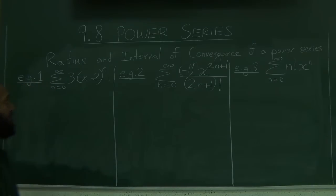Okay, we continue from where we left off. We had just talked about this theorem which tells us about when a power series converges and what the set of convergence looks like. We're going to run through a few examples quickly here. Let's look at this example: 3 times x minus 2 to the power n.